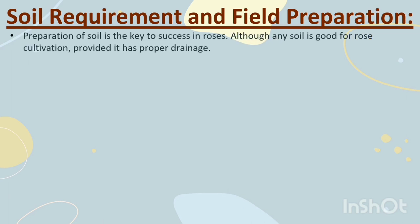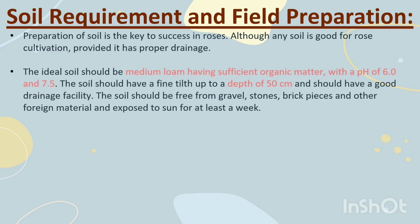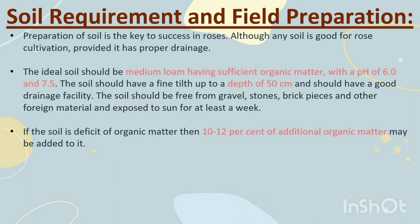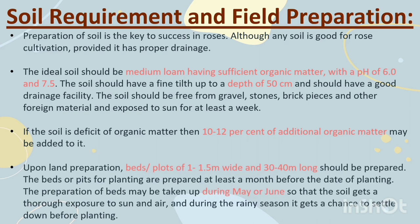Soil Requirement and Field Preparation. Preparation of soil is the key to success in roses, although any soil is good for rose cultivation provided it has proper drainage. The ideal soil should be medium loam having sufficient organic matter with a pH of 6.0 to 7.5. The soil should have a fine depth up to 50 cm and should have good drainage. The soil should be free from gravel, stones, brick pieces and other foreign material, and exposed to sun for at least a week. If the soil is deficient in organic matter, 10–12% additional organic matter may be added. Upon land preparation, beds or plots 1–1.5 m wide and 30–40 m long should be prepared at least a month before the date of planting, during May or June, so that soil gets thorough exposure to sun and air and during the rainy season it settles before planting.